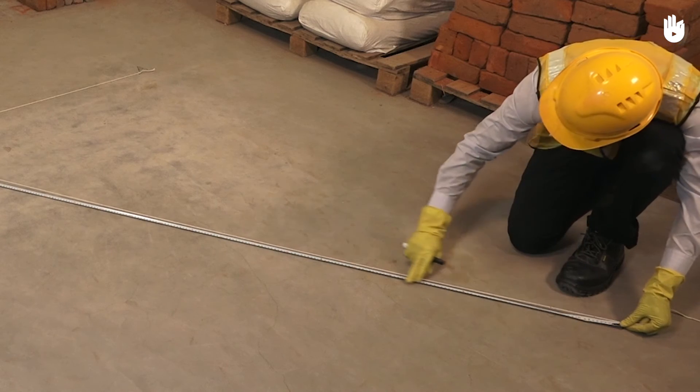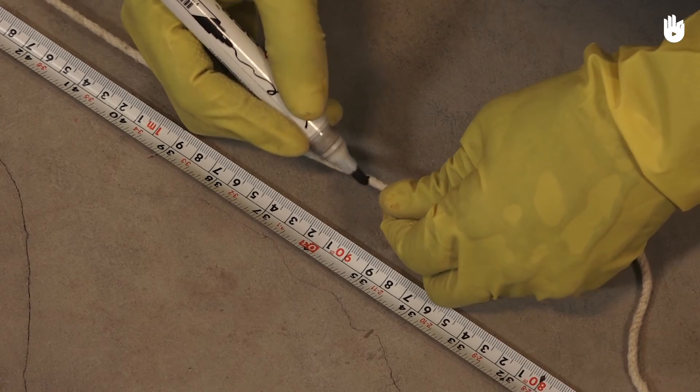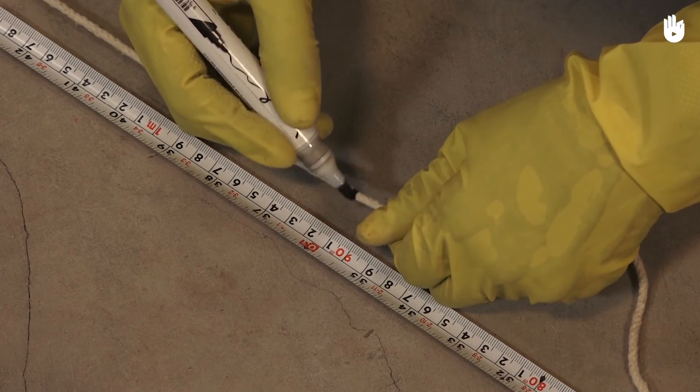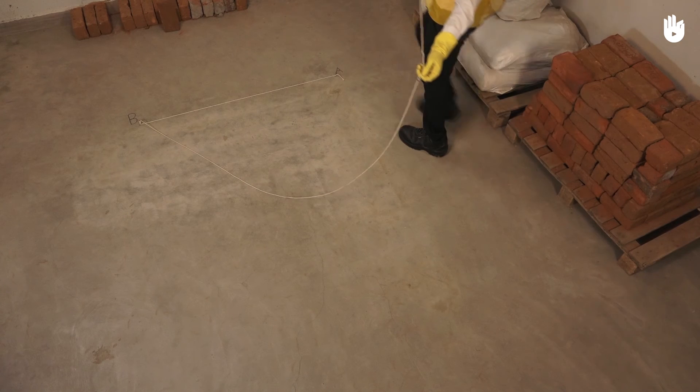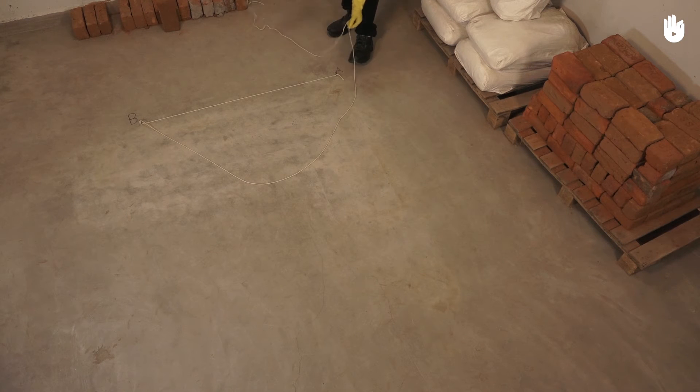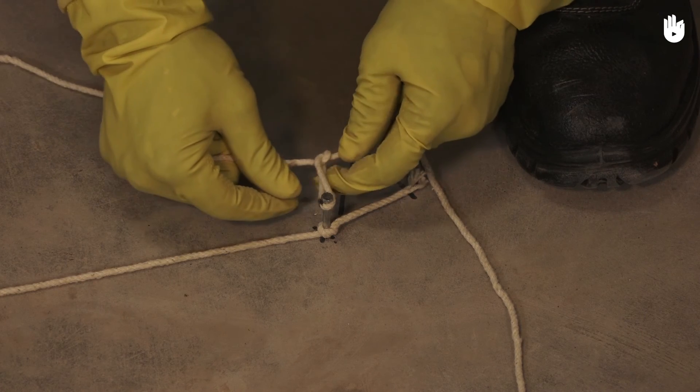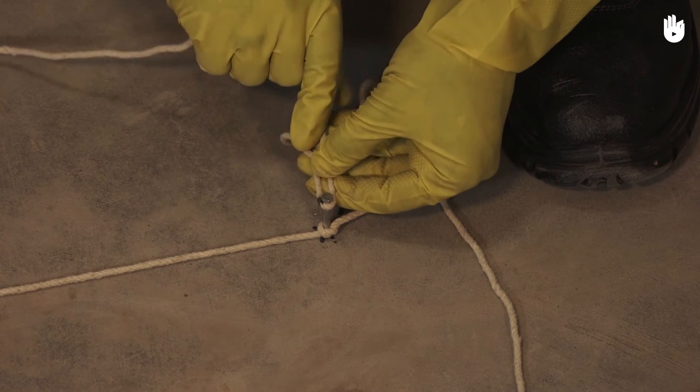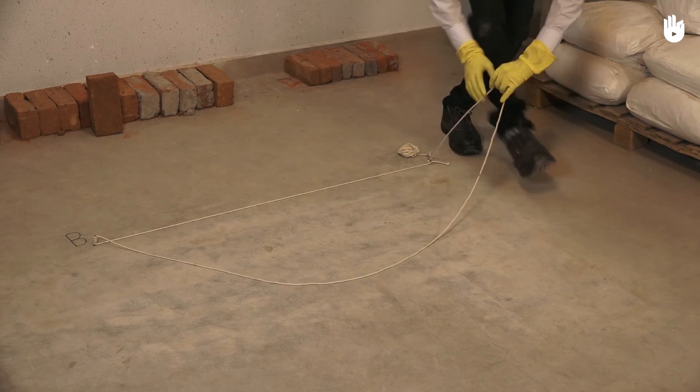With the measuring tape and string still held together, mark the 3 feet point from the 8 feet mark. This point will also measure 5 feet from point B. Tie the loose end of the string to point A exactly where the 8 feet mark has been made. Make sure that you tie the string at the exact spot where it has been marked.